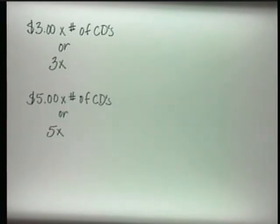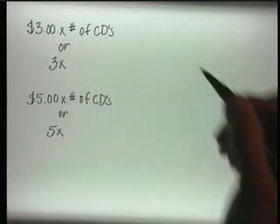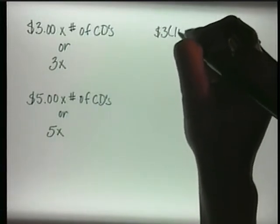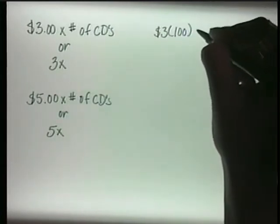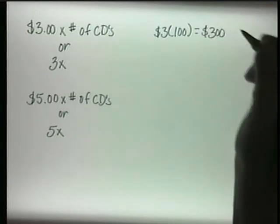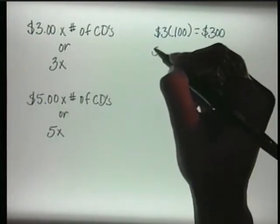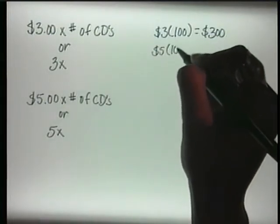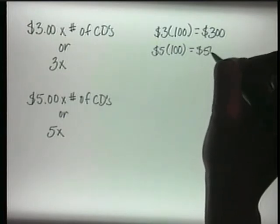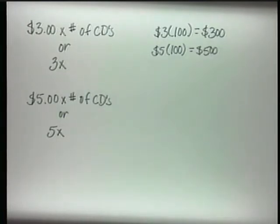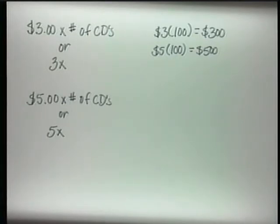What would your wholesale price be for 100 CDs? It would be $3 times 100, and that would equal $300. And what is the selling price of 100 CDs? That would be $5 times 100, which will equal $500. In the terms of 3x and 5x, the x is representing the real value of the number of CDs.